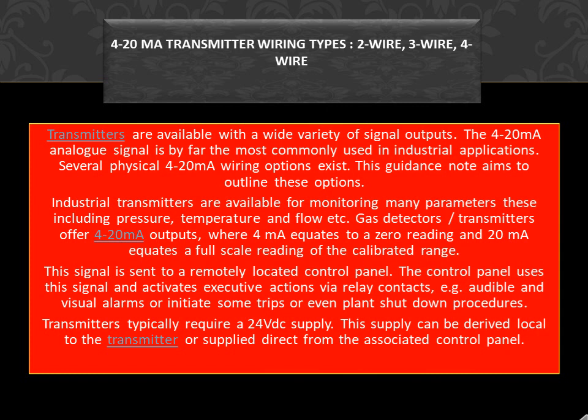Industrial transmitters are available for monitoring many parameters, including pressure, temperature, and flow. Gas detectors and transmitters offer 4-20mA outputs, where 4mA equates to a zero reading and 20mA equates to a full-scale reading of the calibrated range. This signal is sent to a remotely located control panel.